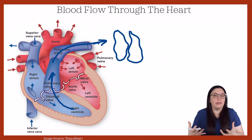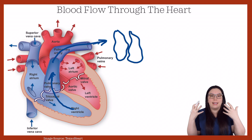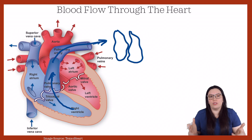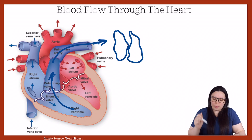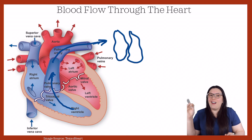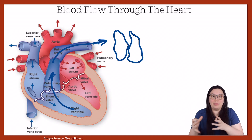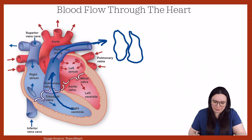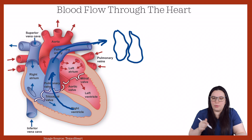Something interesting when it comes to our pulmonary circulation: deoxygenated blood gets pumped through our pulmonary artery. When you think about arteries, they typically contain oxygenated blood delivering it to our systemic circulation. But in pulmonary circulation, it's actually delivering deoxygenated blood through an artery and returning oxygenated blood through a vein. That's the only place within our circulation where that occurs.